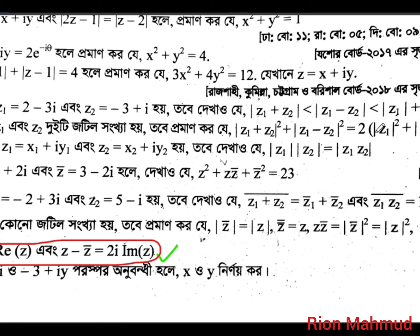Z2 modulus squared is equal to 2 into the vector. This is the type of math. Z1 is equal to x1 plus iy1. Z2 is equal to x2 plus iy2. The math result is equal to x2 plus iy2.